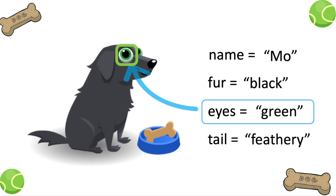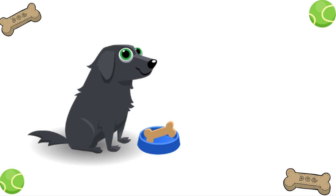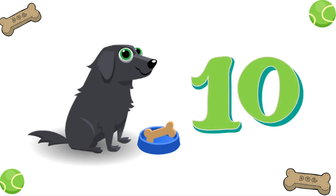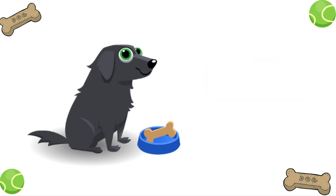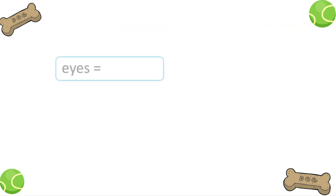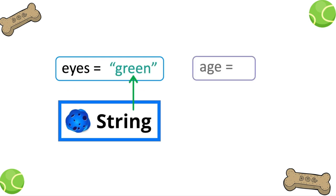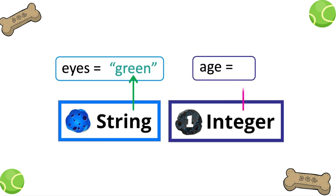But strings aren't the only pieces of information that our program needs to keep track of. For example, Mo is 9 years old, but soon she'll be 10. We want to store the value of her age in a variable, like this. This way we can update or change the number value when we need to. You can see that while some variables store a string, like green, other variables can store an integer.